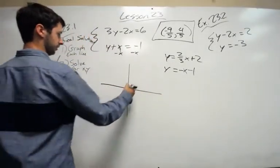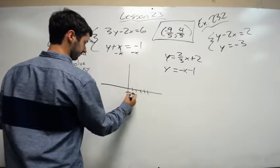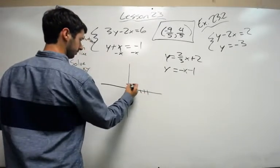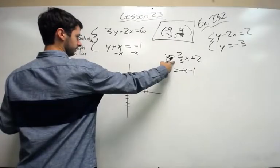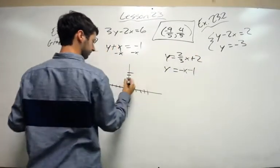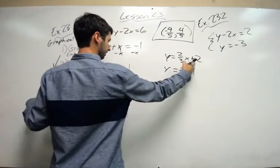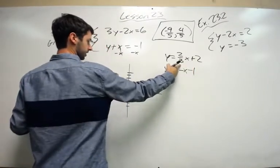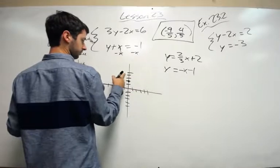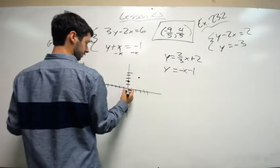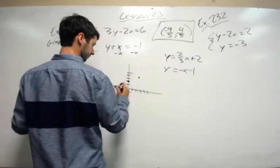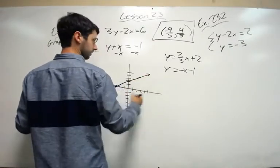I'm going to do five digits or five spots. Then we graph this one. y-intercept to start. 2 is the y-intercept. Now we have a slope of 2 thirds. So go up 2 to the right 3. Down 2 to the left 3. There's one line.